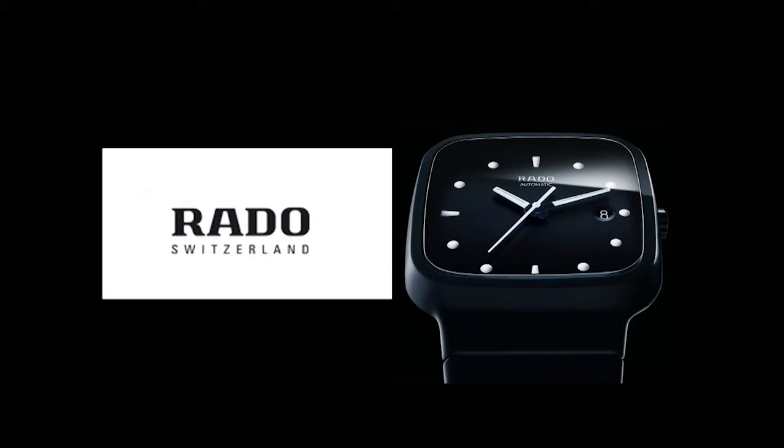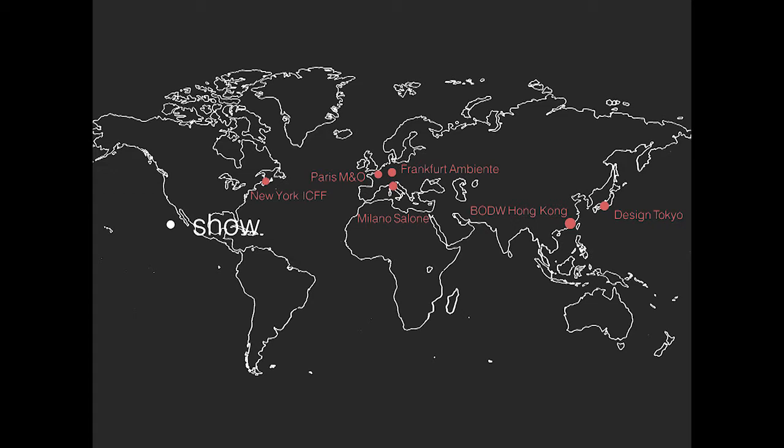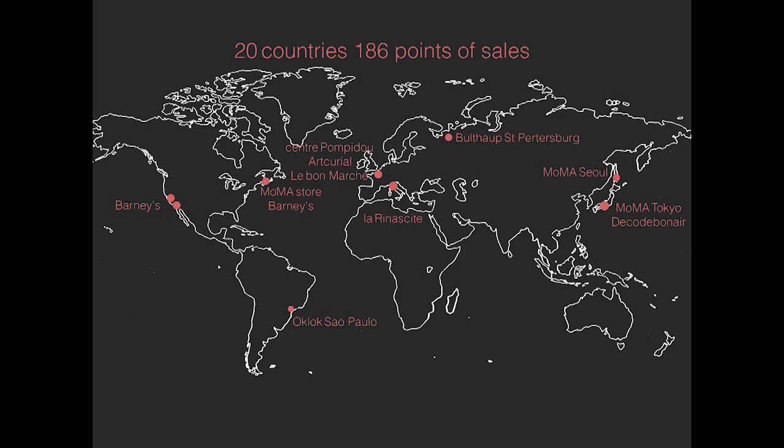If you want to work local and think global, everything is possible in this world, but we need to reinforce local knowledge, keep full control of our process and quality, have a story to tell, and maintain flexibility. Working local makes it easy to develop new products, and new products allow you to show all around the world — at ICFF New York, Maison et Objet in Paris, Frankfurt, Milan Salone, Design Tokyo, and here today at BODW. This allows you to build the brand around the world and have global distribution: 220 countries, 200 sales points in four years. Thank you very much.